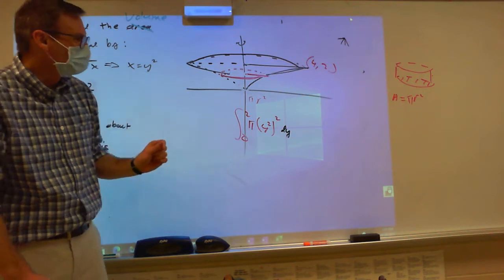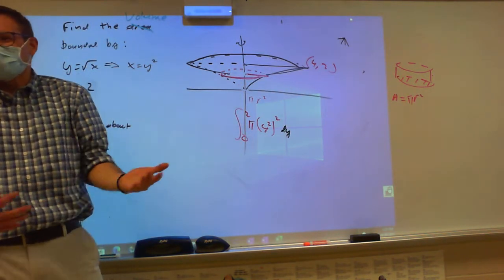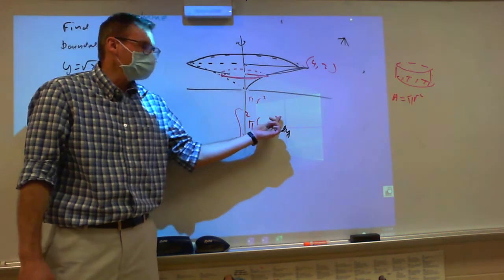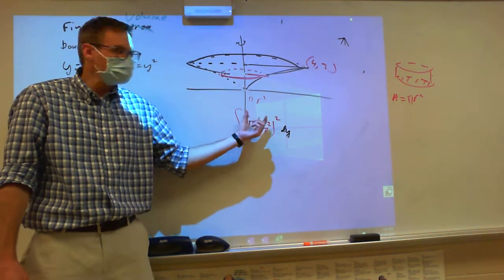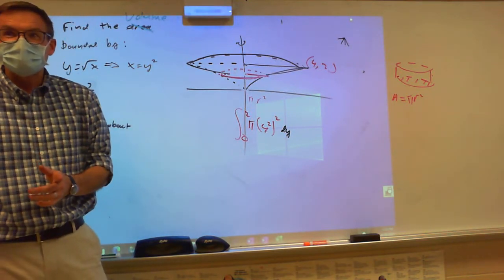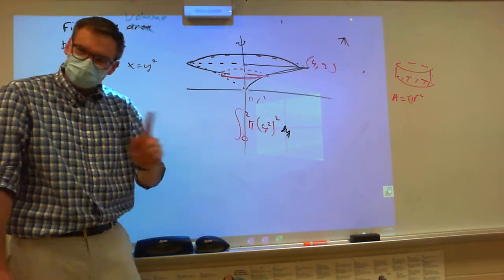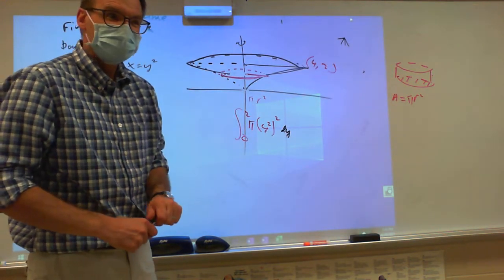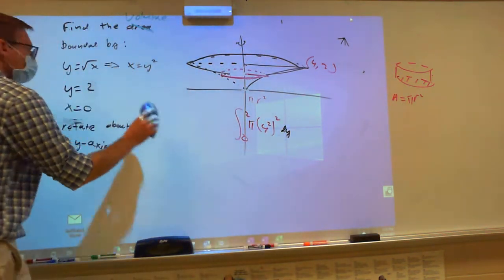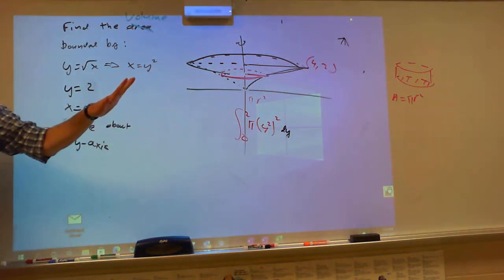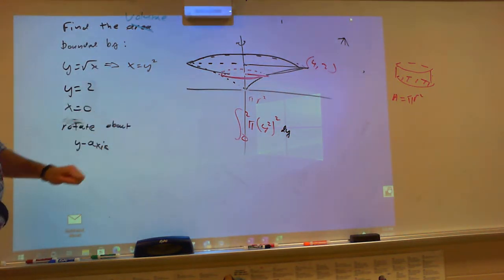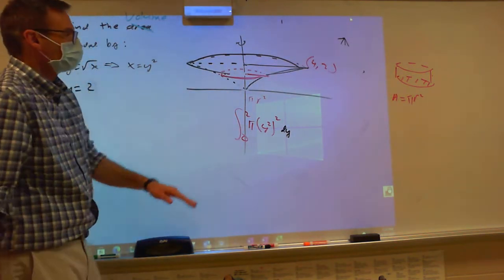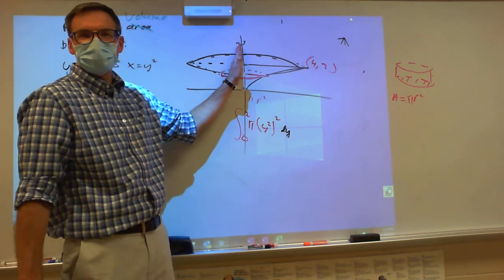You might be looking at this going what's the difference between this and what we did yesterday? You've got a pi and an r squared — you can see the area of a circle. That seems like the only thing different. But I'm not done. So we rotated around the x-axis, we rotated around the y-axis.